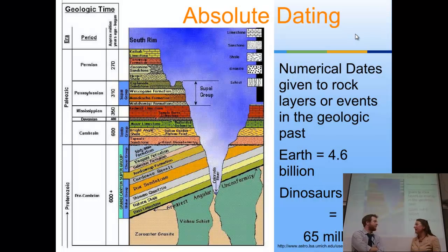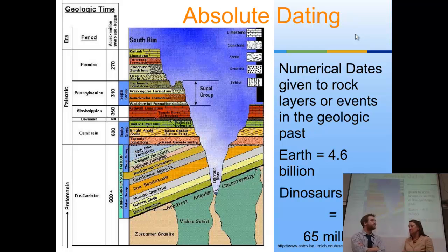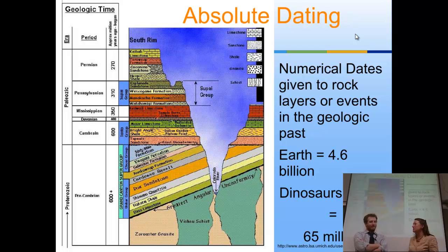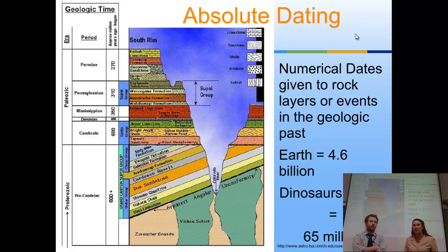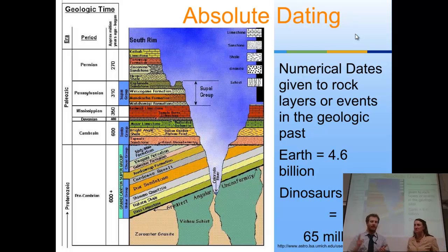So the difference with absolute dating and relative dating — which we talked about before when we were talking about original horizontality, superposition, inclusions, all those things — is that with absolute dating, we're actually going to give an age in years to something. We're not just saying older or younger; we are saying the actual number of years something has been around. So we're giving solid dates — the earth is 4.6 billion years old, dinosaurs went extinct 65 million years ago.